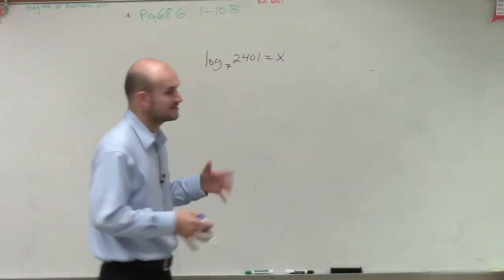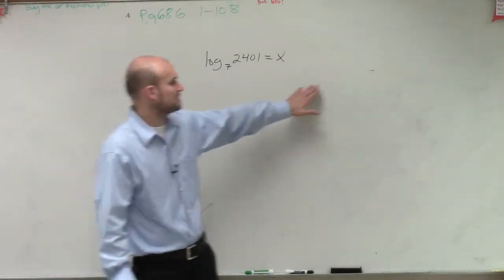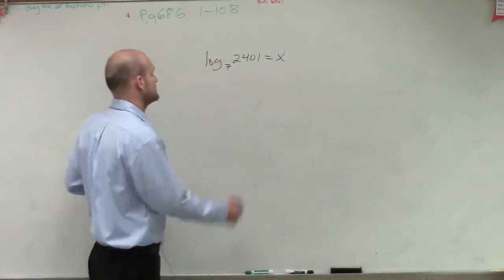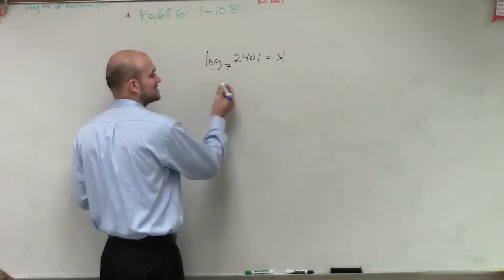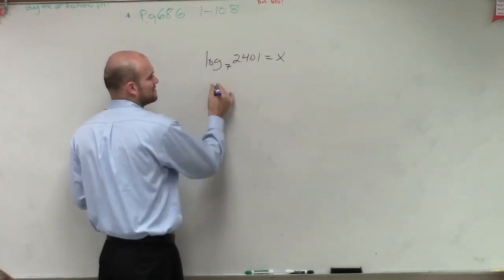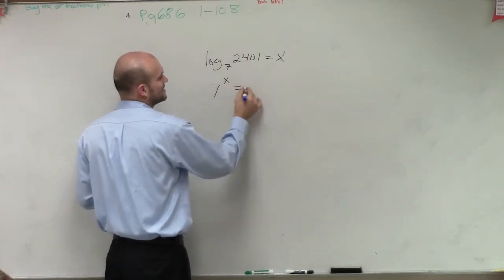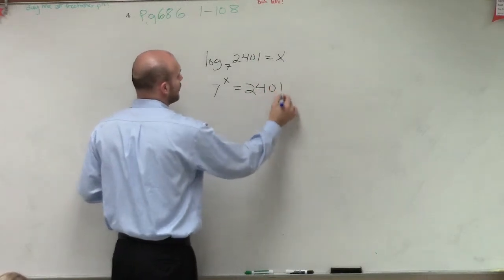So to evaluate for this, there's a couple extra things. There's also another term I'm going to show you guys to do. So to evaluate for this, I could also rewrite it in exponential form. So rewriting this in exponential form would be 7 to the x equals 2,401.